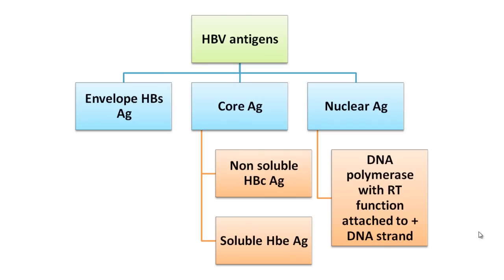The antigens present in hepatitis B virus can be classified as follows. First is the envelope antigen, famously known as hepatitis B surface antigen, and some people also call it the Australian antigen. Then there are two core antigens: the non-soluble core antigen known as hepatitis B core antigen (HBc antigen), and the soluble core antigen known as hepatitis BE antigen. There is also a nuclear antigen in the form of DNA polymerase.